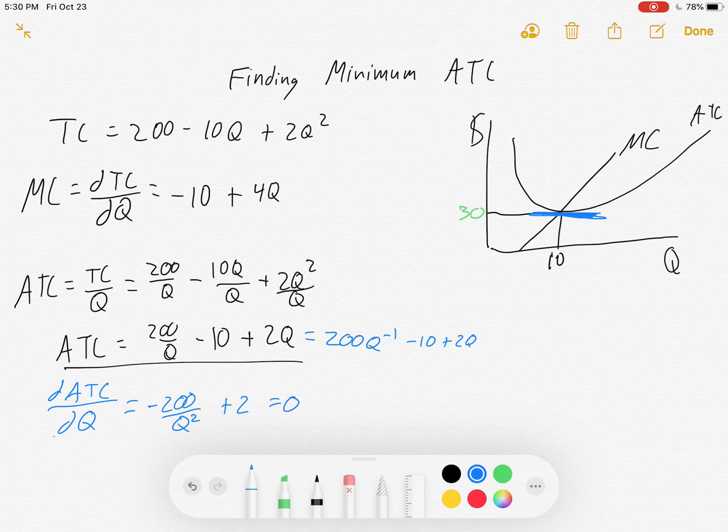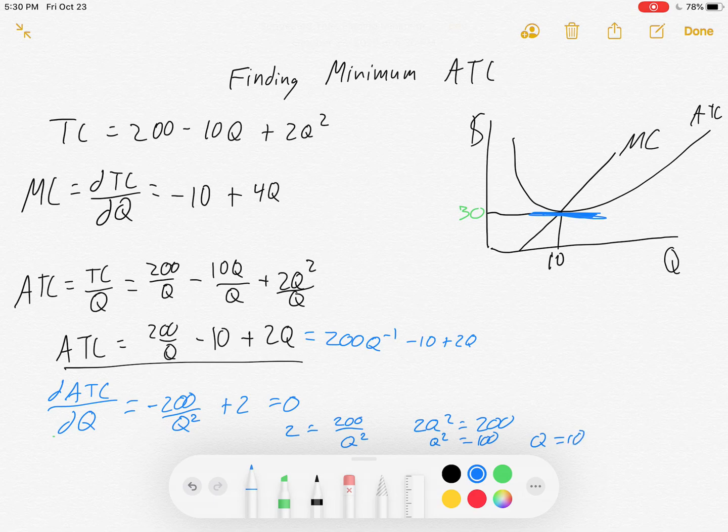So, if you're comfortable taking a derivative, right now this is looking easier to work with. Look, I took one derivative, and here I am. Let's simplify this out. 2 equals 200 over Q squared. 2Q squared equals 200. Q squared equals 100. Q equals 10. Hey, that's the same one as before.